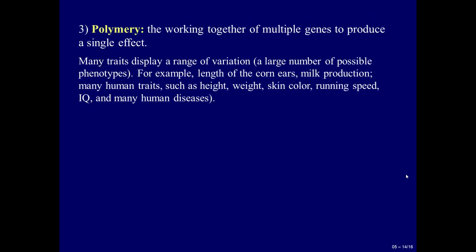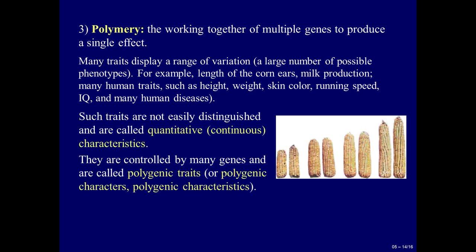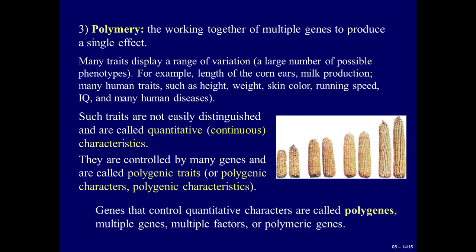The third type of interaction of non-allelic genes is polymery. Polymery describes the working together of multiple genes to produce a single effect. Many traits display a range of variation with a large number of possible phenotypes — for example, length of corn ears, milk production, and many human traits such as height, weight, skin color, running speed, IQ, and many human diseases. Such traits are called quantitative or continuous characteristics. They are controlled by many genes and are called polygenic traits or polygenic characters. Genes that control quantitative characters are called polygenes, multiple genes, multiple factors, or polymeric genes.